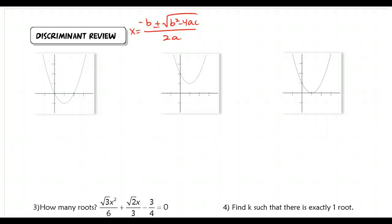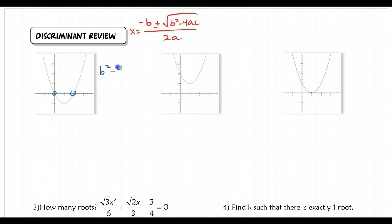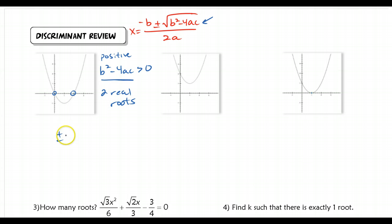For this next part, we're going to talk about the discriminant — this is basically a review of Algebra 2. If we have our quadratic formula, the discriminant is the inside of that radical: b² − 4ac. There are three cases. If b² − 4ac is greater than 0, that means it's positive. If your discriminant is positive, then you're going to get two real roots, because you'd be adding and subtracting some number, which always guarantees two real roots.